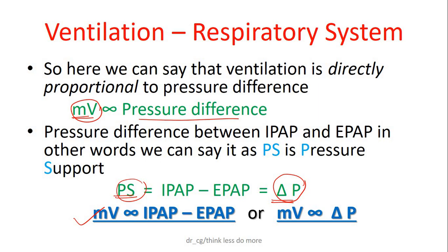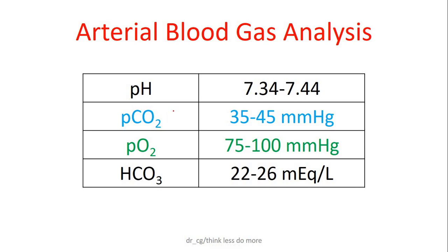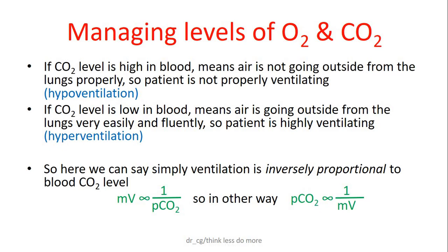Now this is enough for the theoretical aspect. We should know how to set these pressures in different patient conditions, as it directly correlates with the patient's blood levels of oxygen and carbon dioxide. First of all, let's see the normal levels: normal arterial CO2 is around 40, and for O2 it's around 88.